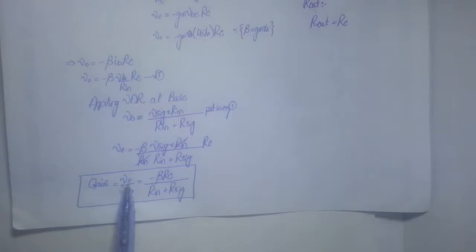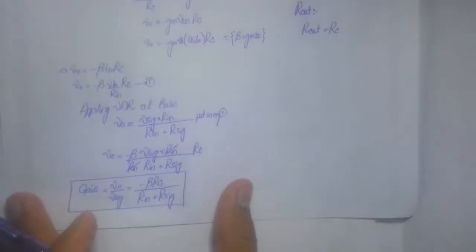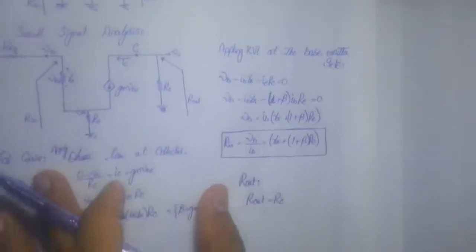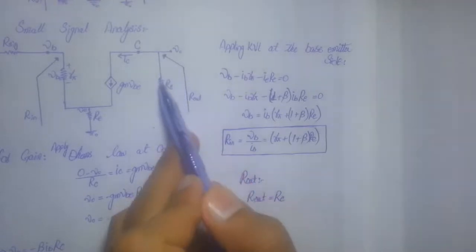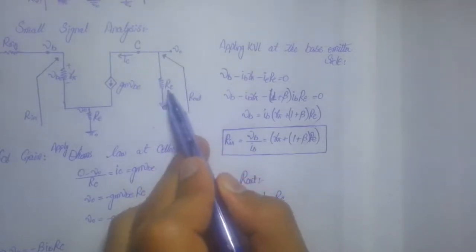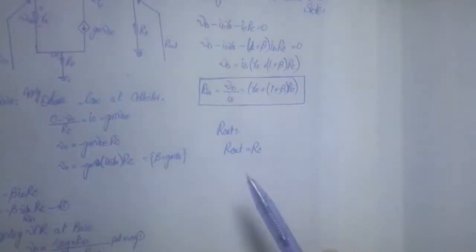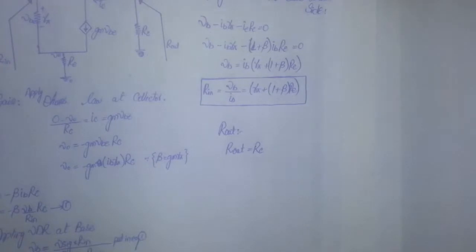The voltage gain equals Vout divided by V-signal = −β·RC divided by (RN + R-signal). Finally, Rout is simply RC — looking into the output from the collector side gives Rout equals RC. I hope you enjoyed this video. If you have any questions, ask in the comment section. Thank you so much for watching.